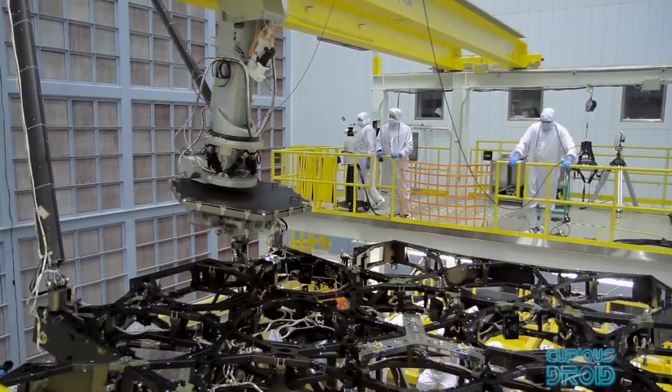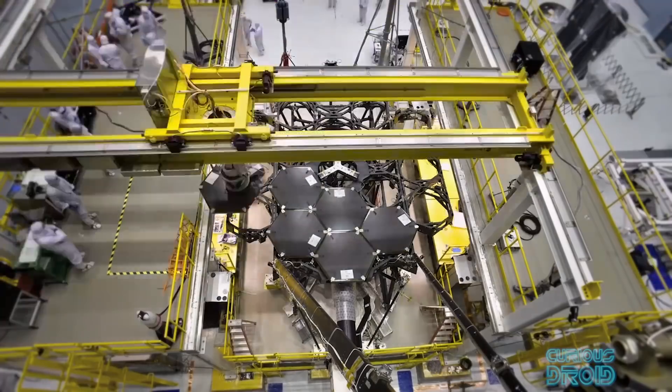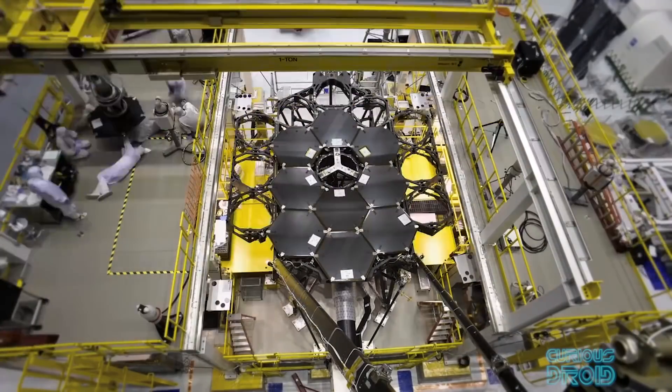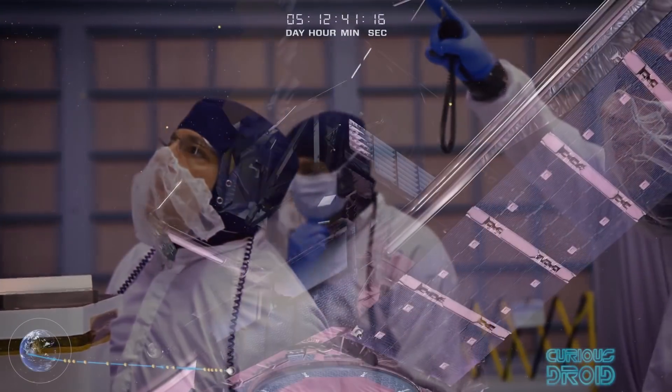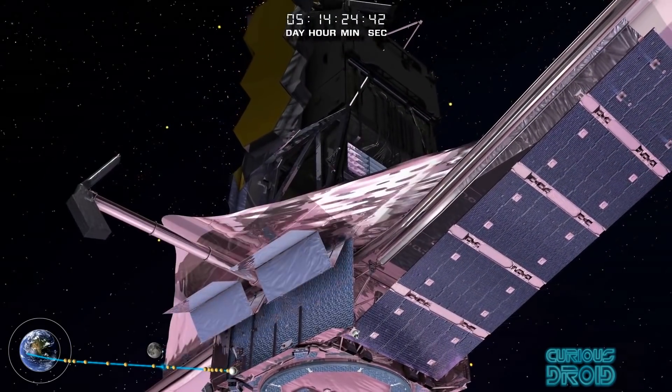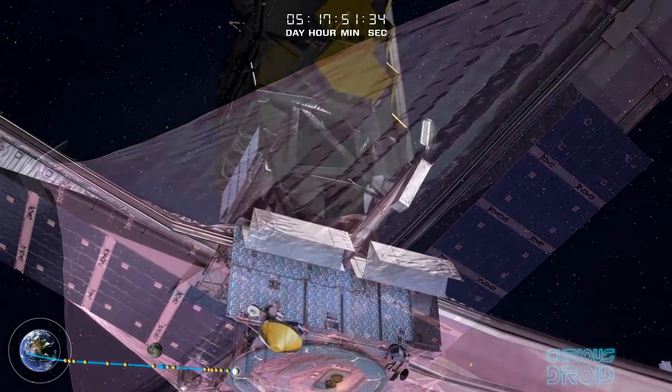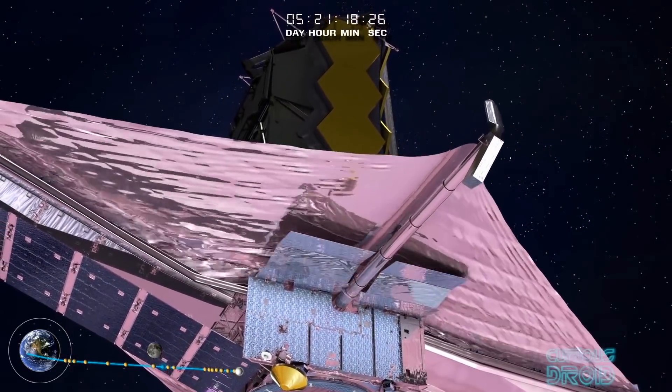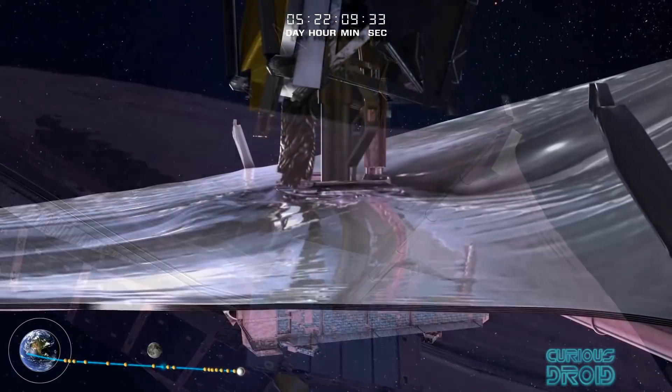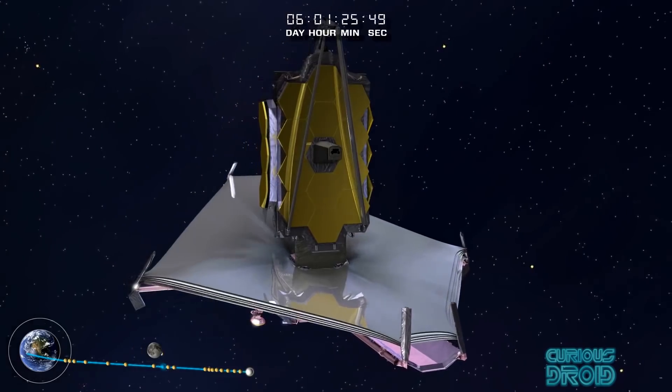The other issue is that no one has built anything quite like the James Webb before. At the time of its conception, at least 10 of the technologies required had yet to be invented. Things like the giant five-layer sunshield the size of a tennis court that will take two weeks to deploy from its folded up form. And it's not only the detectors, the sunshield, and the control systems which will have to work at just a few degrees above absolute zero.